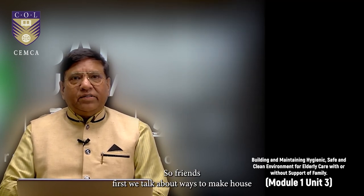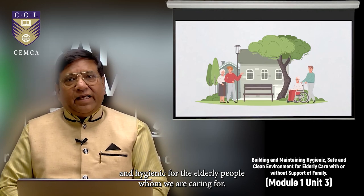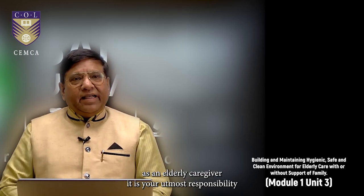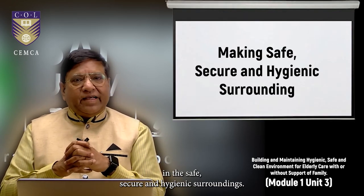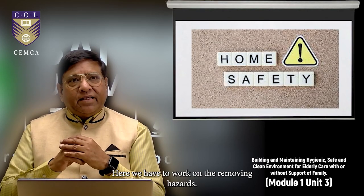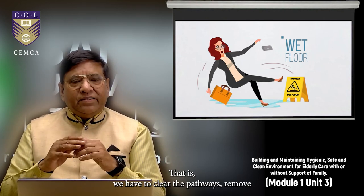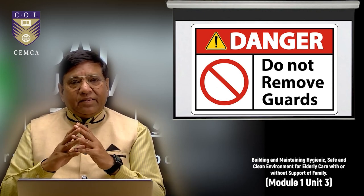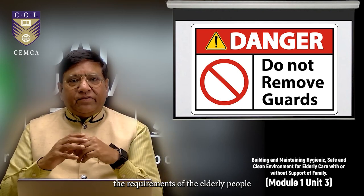First we talk about ways to make house and surrounding environment safe, secure and hygienic for the elderly people whom we are caring for. As an elderly caregiver, it is your utmost responsibility to keep the elderly person in safe, secure and hygienic surroundings. The first and foremost is home safety. Here we have to work on removing hazards. That is, we have to clear the pathways, remove loose rugs or cords and secure carpets to prevent tripping. In other words, keep the room in an organized condition, keeping in mind the requirements of the elderly people.